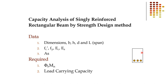For capacity analysis of a singly reinforced beam, the following data will be given: dimensions — width, height, effective depth, span; FC prime (concrete compressive strength); FY (steel yield strength); EC and ES (moduli of elasticity of concrete and steel); and AS (area of steel). From this input data, we calculate the moment capacity — how much moment this beam can take.